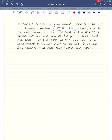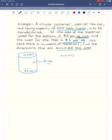The circular container, open at the top, and having a capacity of 24π cubic inches, is to be manufactured. The cost of the material used for the bottom is $3 per square inch, and the cost for the rest is $1 per square inch. Find the dimensions that will minimize the cost. A circular container, open at the top, so we've got a can. That is one awesome can. It's open here. The bottom is $3 per square inch, and the rest is $1 per square inch. We want to minimize the cost.